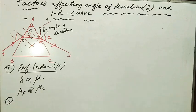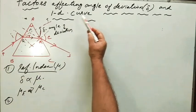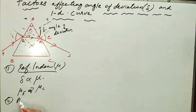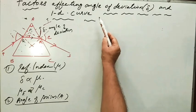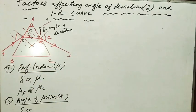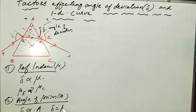The second factor is the angle of prism A. It is found that the angle of deviation delta increases with increase in the angle of the prism, so delta is directly proportional to angle A. As the angle of the prism increases, the angle of deviation also increases. Please remember the equation: delta equals (mu minus 1) times A. For a given prism, the quantity (mu minus 1) is constant, so delta is directly proportional to the angle of the prism.